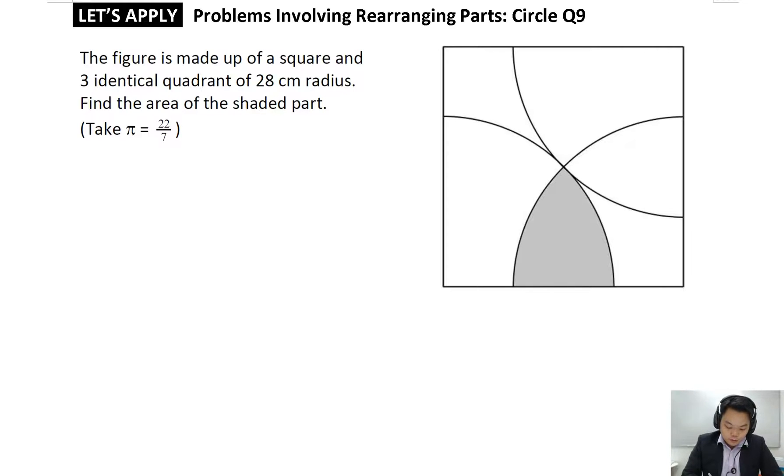The figure is made of a square and three identical quadrants of 28 cm radius. Find the area of the shaded part, taking pi to be 22 out of 7.